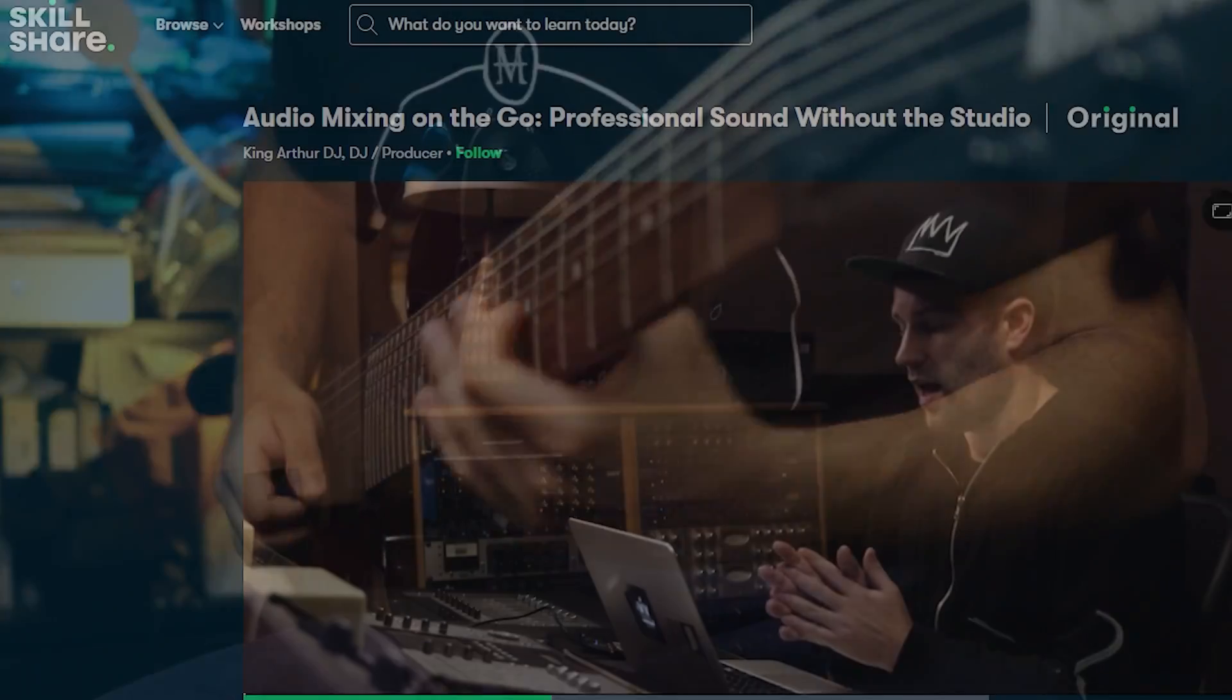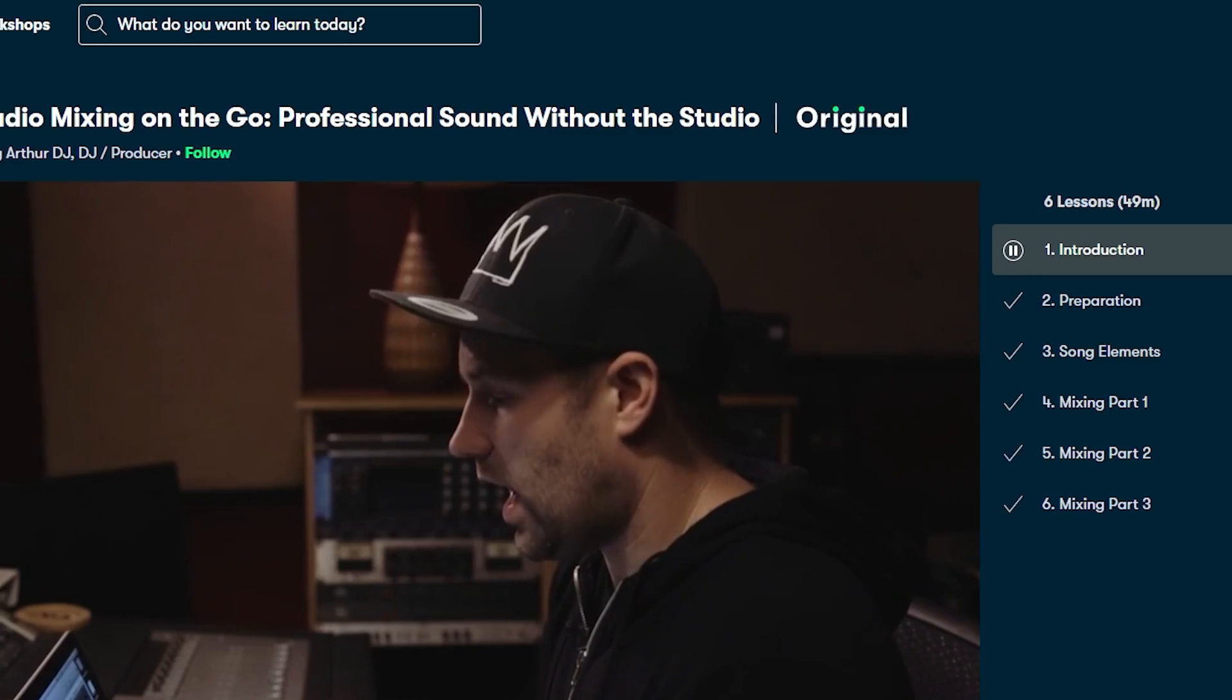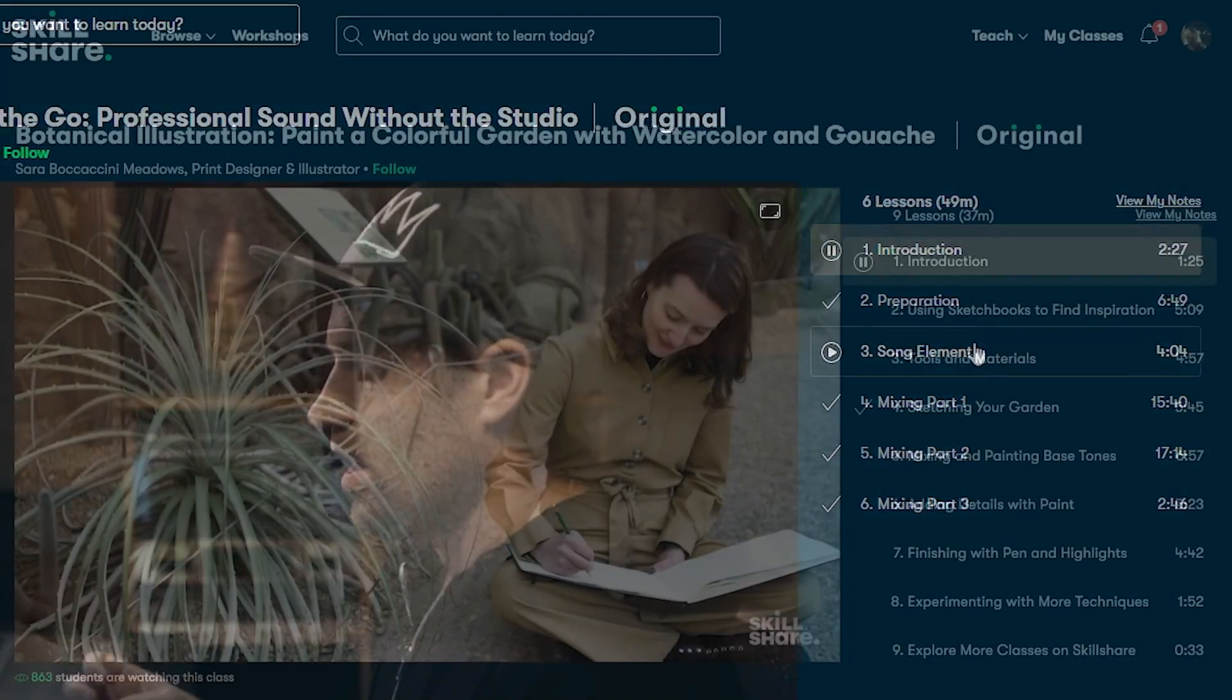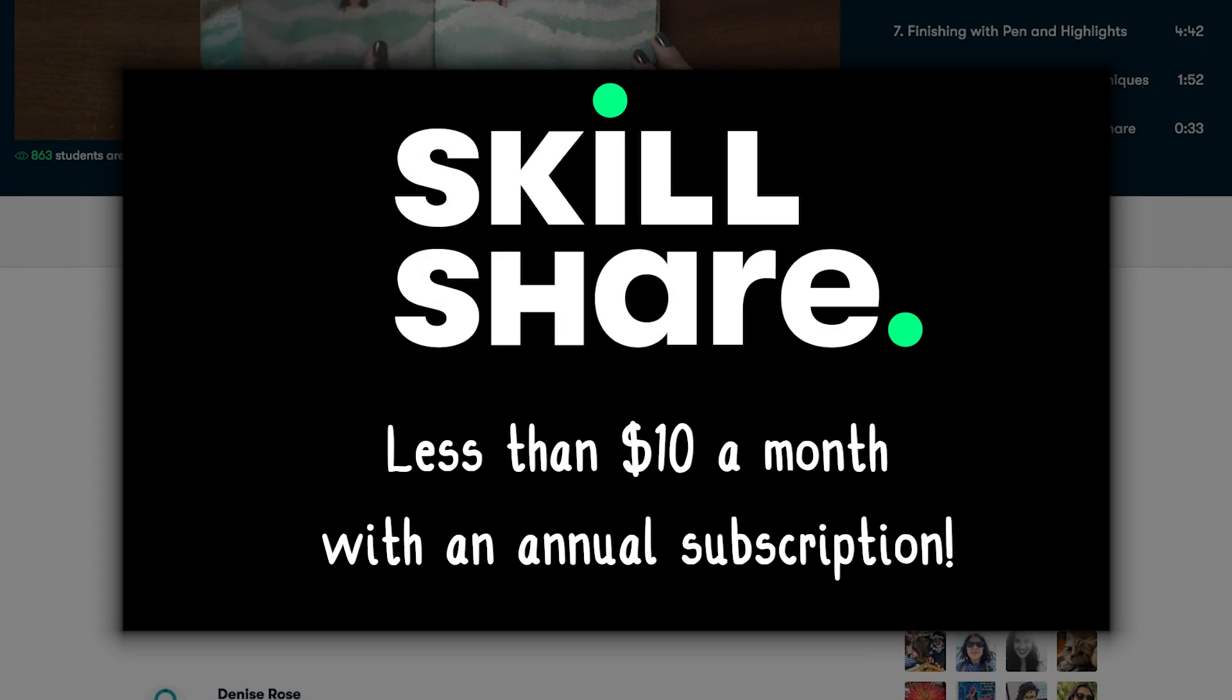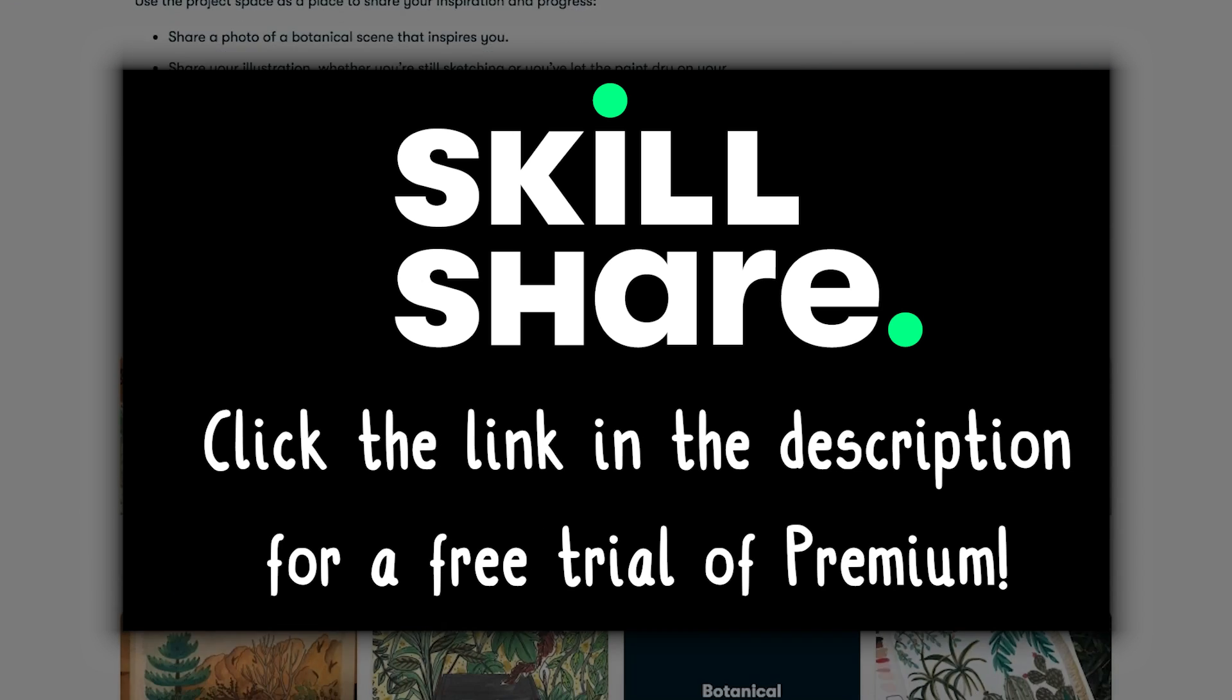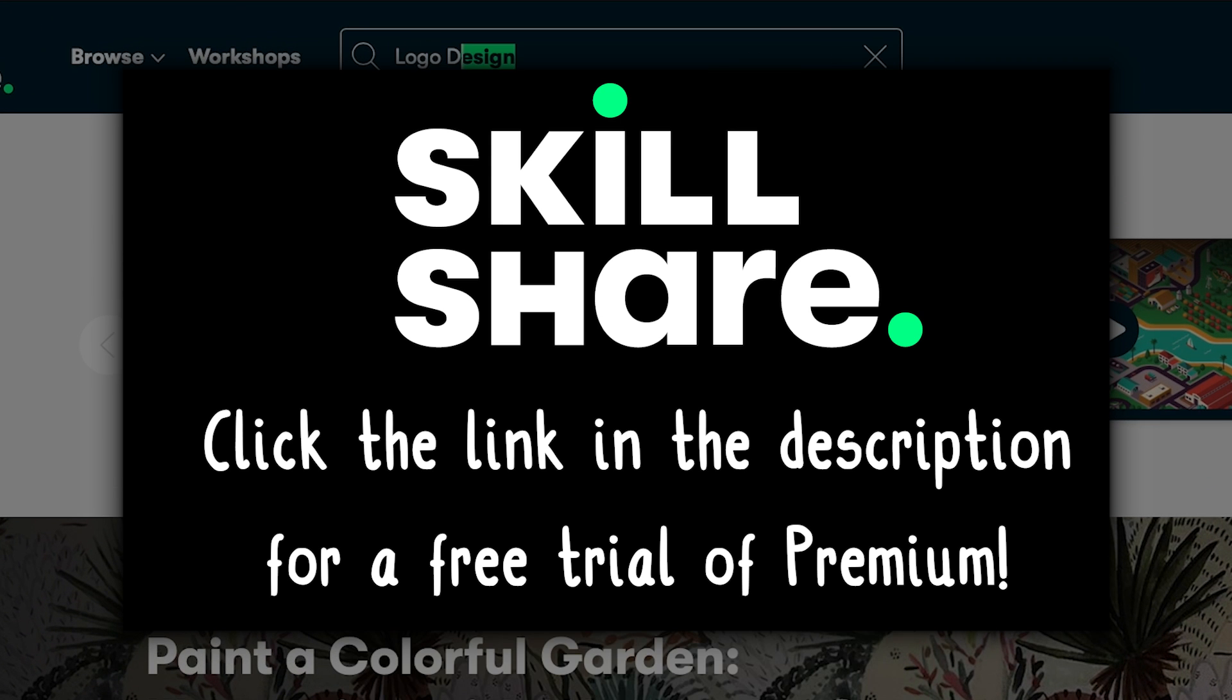For example, I took a class called Audio Mixing On The Go, Professional Sound Without The Studio by King Arthur, which gave me lots of tips for improving my mixes without lots of fancy equipment. And that's the key here. Skillshare has a large number of classes to choose from, and it's all about learning, so there are no adverts. And Skillshare costs less than $10 a month with an annual subscription. But the first 1,000 of you to click the first link in the description box below will get a free trial of Skillshare Premium. Please do go check it out, and big thanks to Skillshare once again for sponsoring this video.